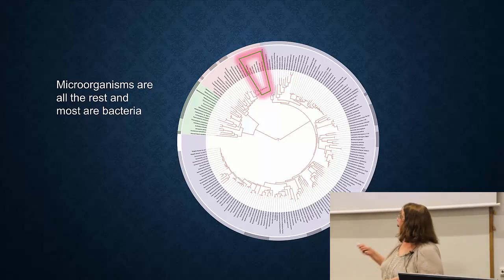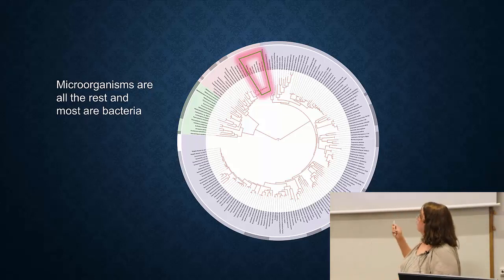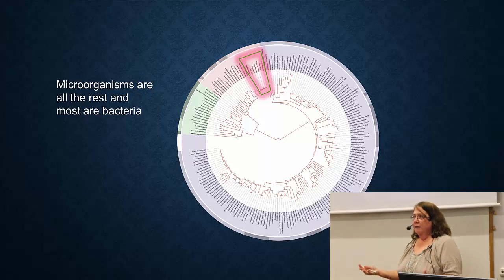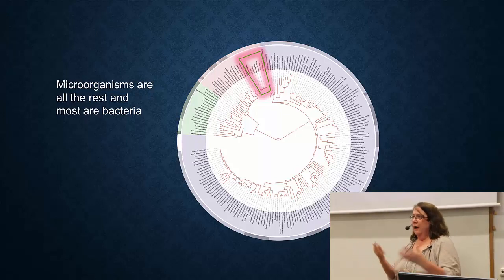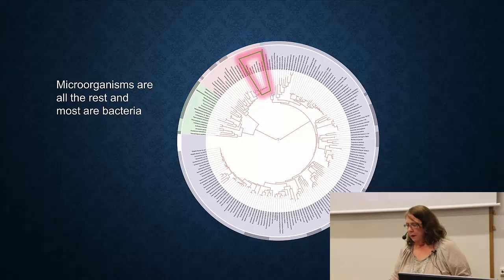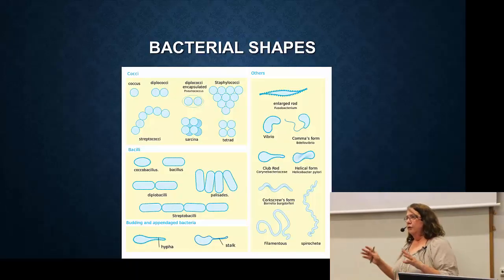So when you have this huge diversity, how do you even get started in characterizing? If you go to a hospital with an infection, how do they even get started? Well, the first thing we look at is cell shape.